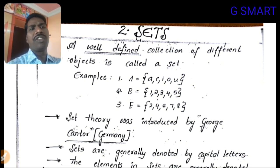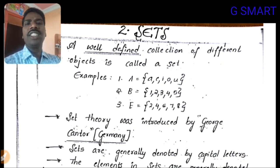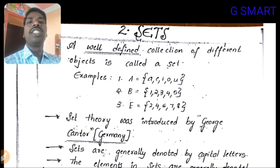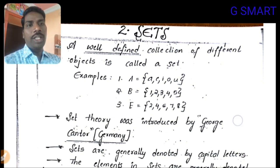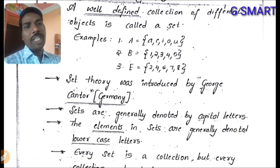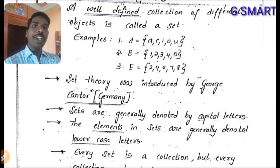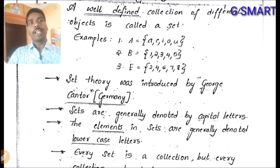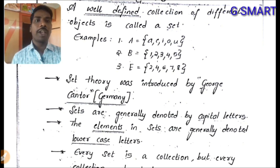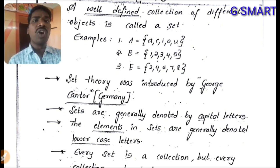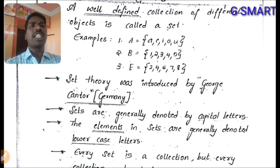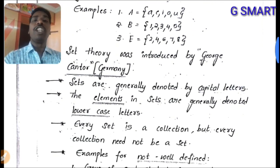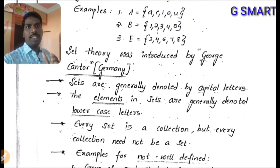Set theory was developed by George Cantor, a German scientist. Sets are generally denoted by capital letters, and the elements of a set are denoted by small letters (lowercase). Every set is a collection, but every collection need not be a set.